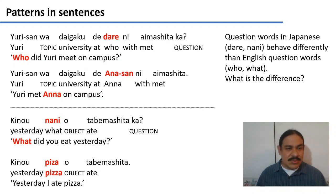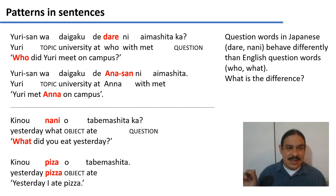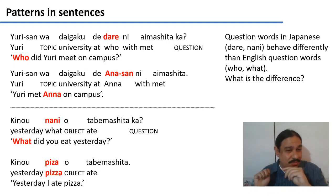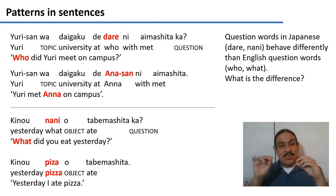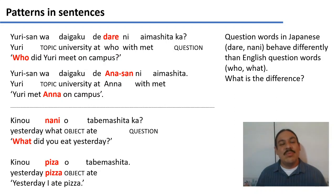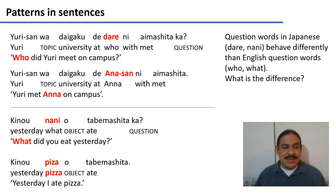The third example is also a question: 'Kinō nani o tabemashitaka?' — 'What did you eat yesterday?' Literally: yesterday, what, the little 'o' marks the direct object — you can ignore it for now — yesterday, what, ate, you? Meaning: 'What did you eat yesterday?' And the answer is 'Kinō pizza o tabemashita' — 'Yesterday, pizza, ate' — meaning 'I ate pizza yesterday.'